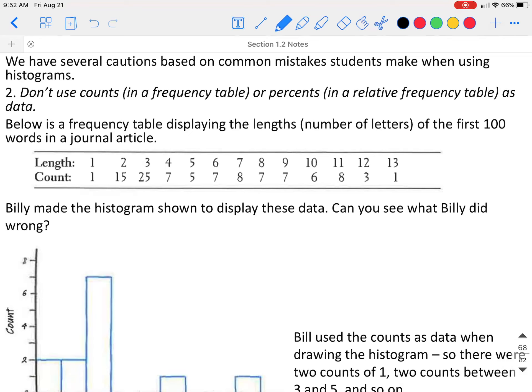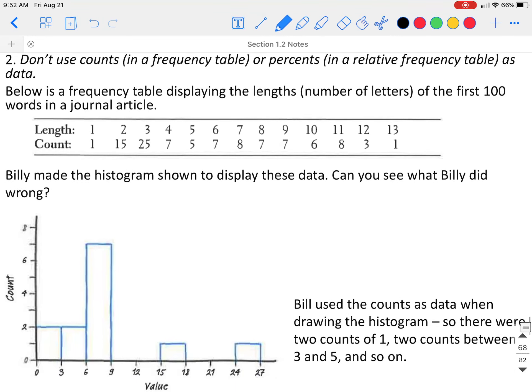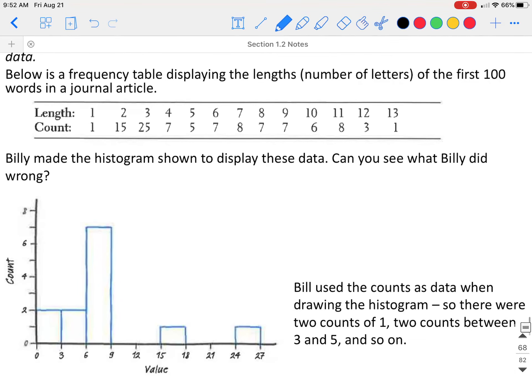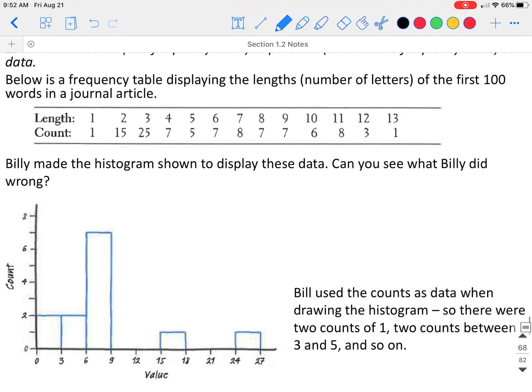We have several cautions based on common mistakes again. The second one is, don't use counts in a frequency table or percents in a relative frequency table as data. If we look at the length of letters in the first 100 words in a journal entry, we can see that there's only one word that has a length of one. There are 15 words that have a length of two. 25 words that have a length of three. 7 words that have a length of four.